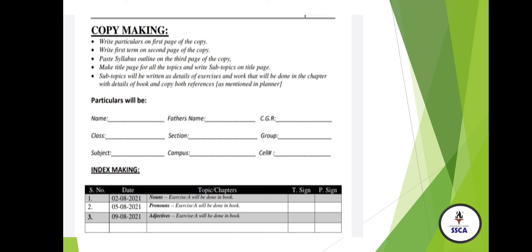First of all, I would like to share the instructions for copy making. Number 1: write particulars on the first page. Number 2: write the first term on the second page. Number 3: paste the slipper's outlines on the third page. Make a title page for all the topics with subtopics. Your particulars will include your name, father's name, section, class, cell number, etc.